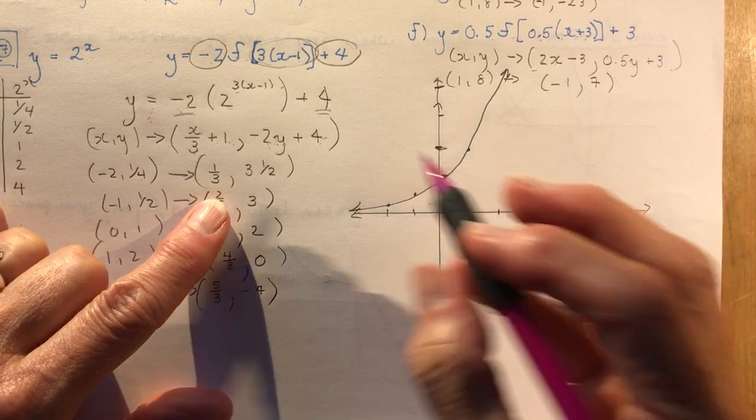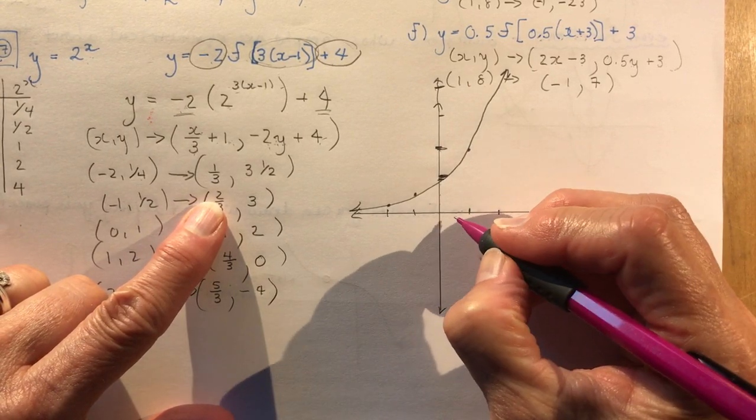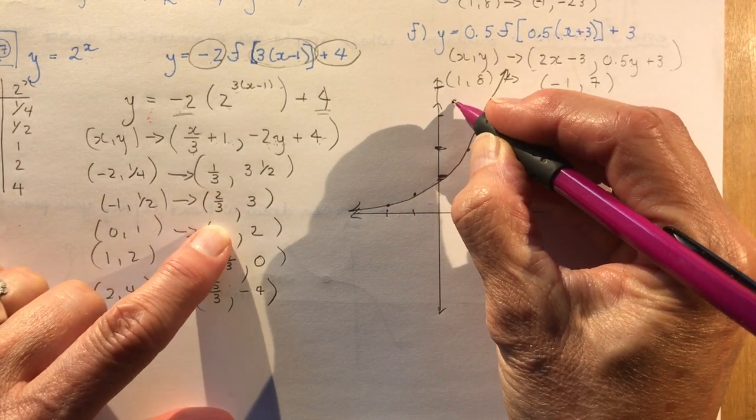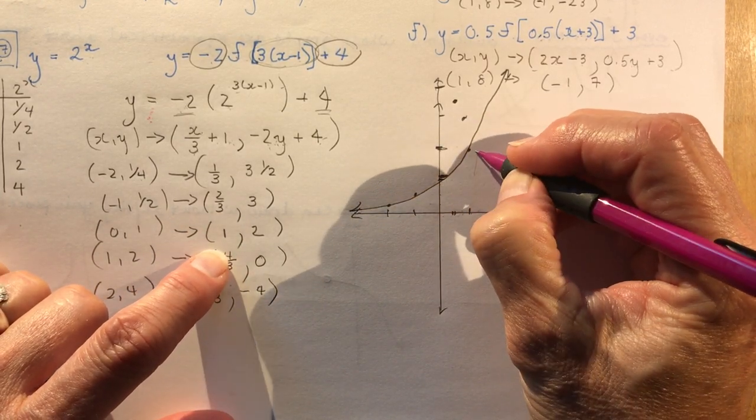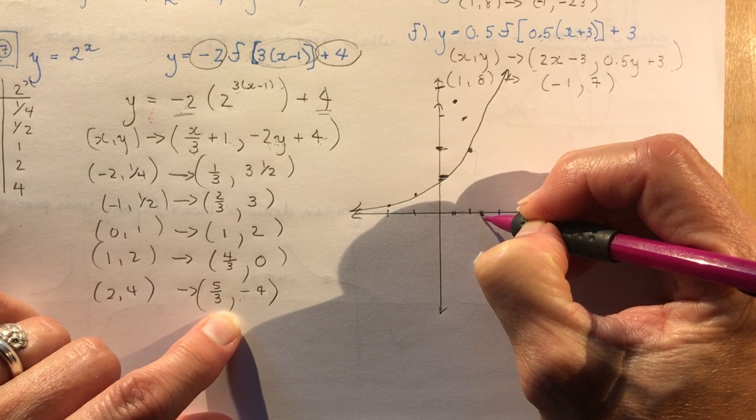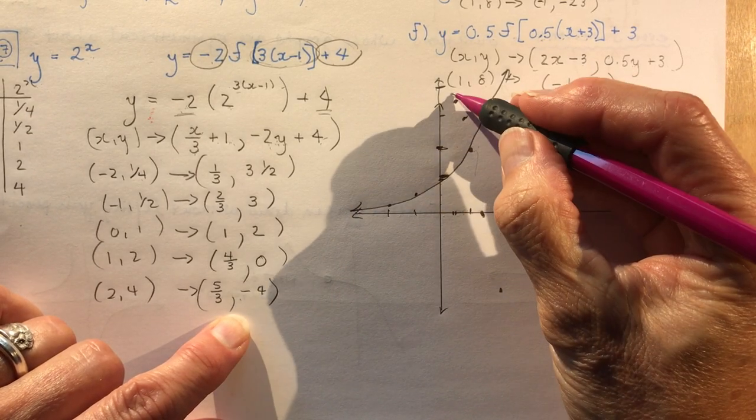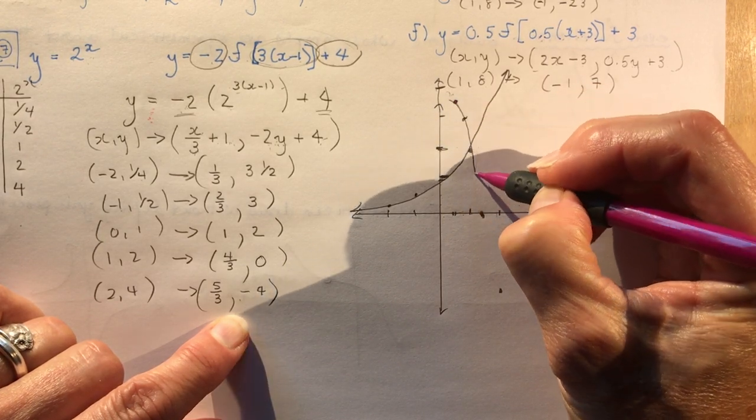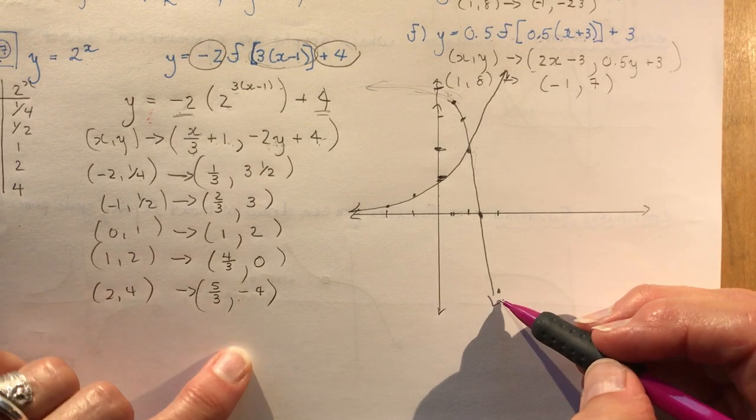Okay, so where's my transform function now? So I had a reflection, right? So it means it's going to be going upside down. So I have 1 third and 3 and a half. 1 third, about there. 1, 2, 3 and a half. And I have 2 thirds and 3. And I have 1 and 2. That's the same point here. And I have 4 thirds and 0. And I have 5 thirds, which is 1 and 2 thirds and minus 4. That's kind of a weird graph, isn't it? So it's going down. It's going down like this. So I flipped it. It should be coming down like that. It should be going like this, right? Okay, so here's my graph.